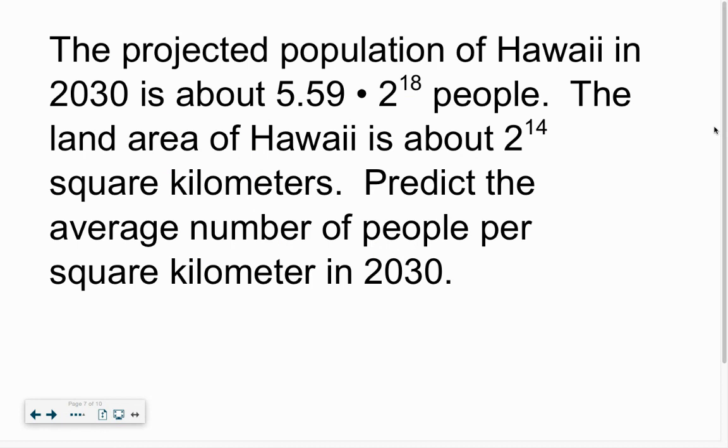Word problem. So projected population, sometimes they'll do that with large numbers. We'll write them in an interesting way. We'll talk more about those in a moment. But from there, you can see the projected. So it's estimated in 2030, the Hawaiian population will be 5.59 times 2 to the 18th. The land area of Hawaii is 2 to the 14th square kilometers.